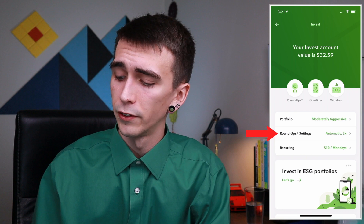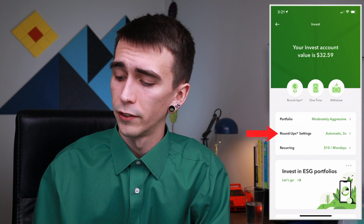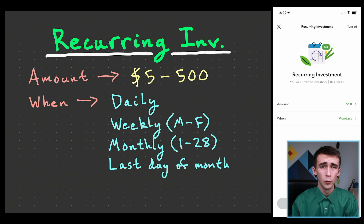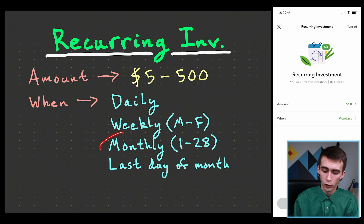Moving on to the second most important feature: the recurring investment section. You choose an amount between $5 and $500 and select the frequency — daily, weekly (Monday through Friday), or monthly, with options from day one to twenty-eight or the last day of the month.